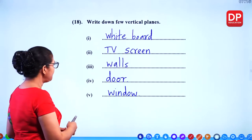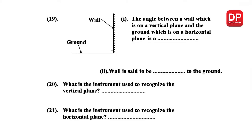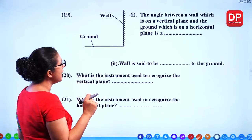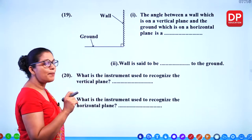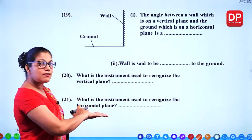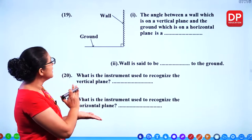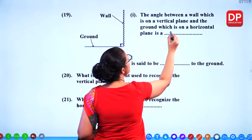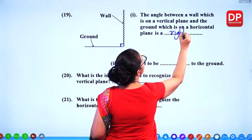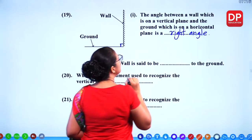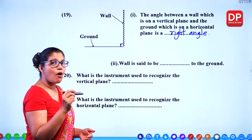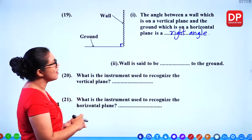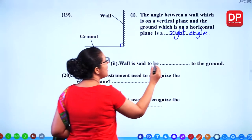So what is a vertical plane? There's a wall and this is the ground. The angle between a wall — which is on a vertical plane — and the ground — which is on a horizontal plane — is a right angle, 90 degrees. We call the wall and the ground perpendicular to each other. We use the word 'perpendicular' when the angle is a right angle.